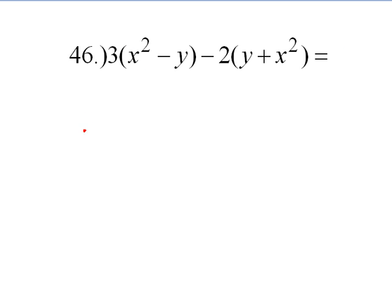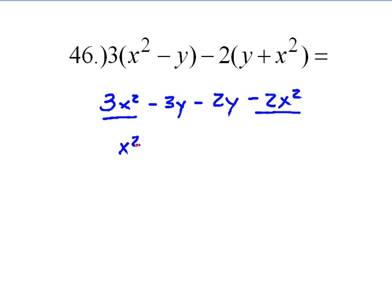All right, back to me. Here we go. I must distribute the outside number inside the parentheses. So I have 3x² minus 3y. Now I distribute the negative 2. So I have negative 2y minus 2x². Okay, let's combine like terms. We have a 3x² and a negative 2x², which should leave us with just x². Then we have negative 3y and negative 2y gives us negative 5y. Very good.